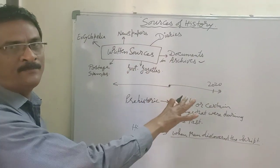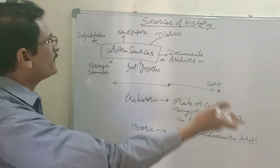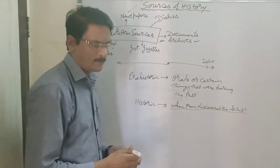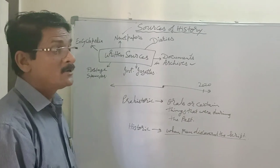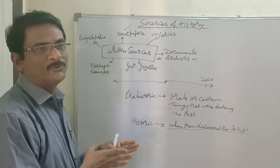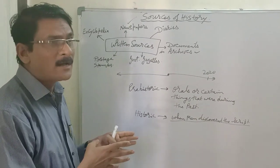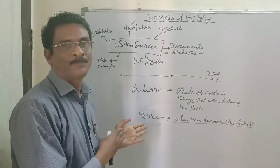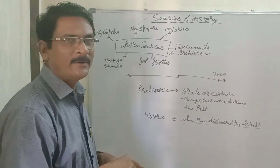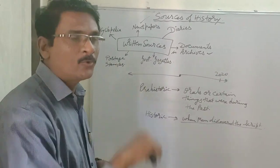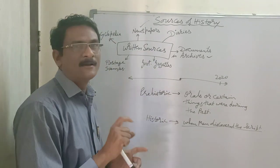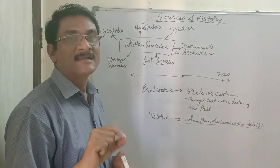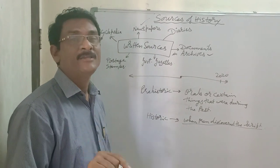These are some among the written sources; apart from that, there are many. We all know about newspapers. There are various newspapers in India. Some of the newspapers are more than 100 years old. During the British rule, when Calcutta was the capital of the East India Company in India, the first newspaper started for the British officers.